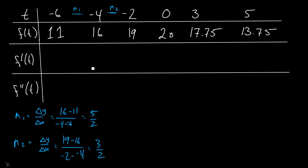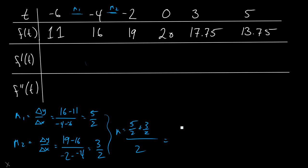m2 equals 3 over 2. To get my value, I'm going to take the average of these two values, which is 5 halves plus 3 halves divided by 2, which is 8 halves on top — so that's 4 on top divided by 2, which is just 2. So that's going to be my entry here: slope here, slope here, average.